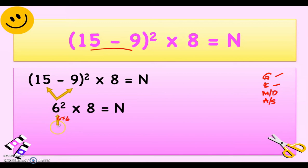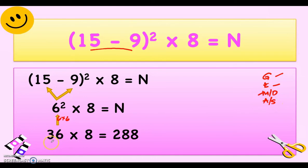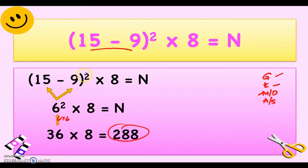36 times 8 — there is no division, no addition, no subtraction — so our last operation is multiplication: 36 times 8 equals 288. Take note: we didn't perform the exponent inside because the exponent is outside the parenthesis. If the exponent were inside, you would perform it first. We only perform what's inside the grouping symbols.